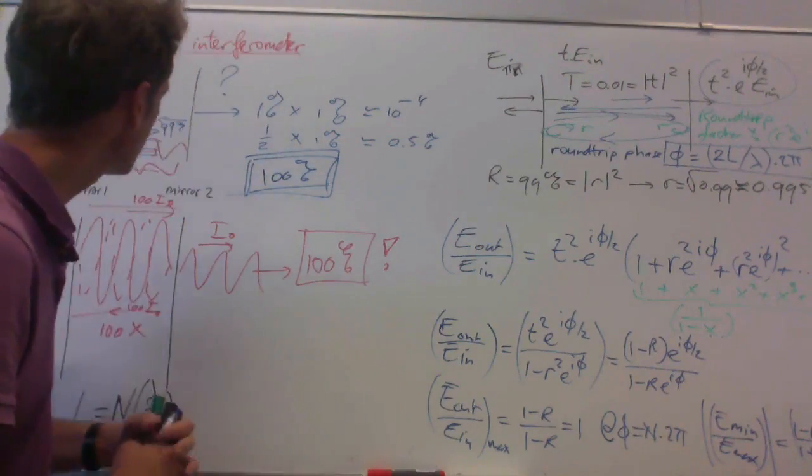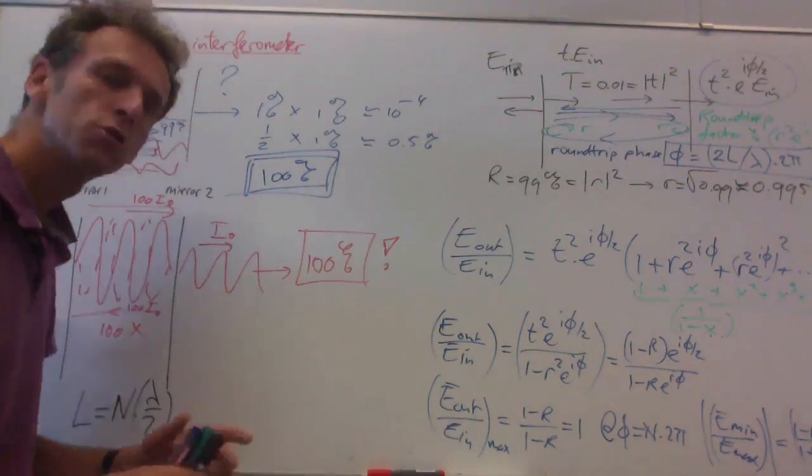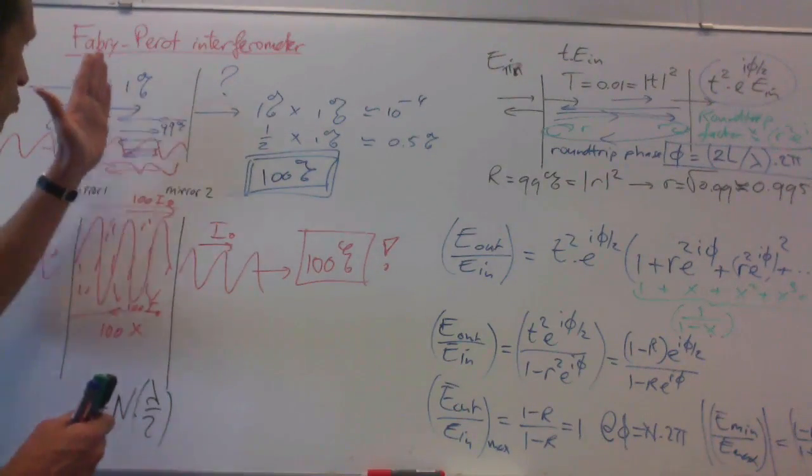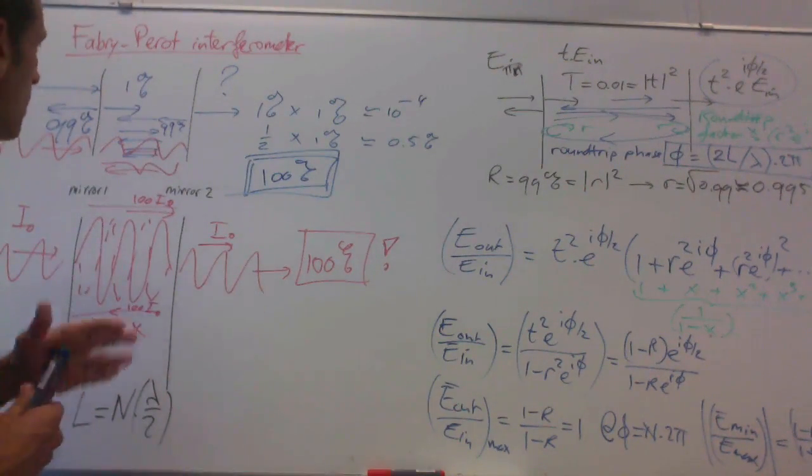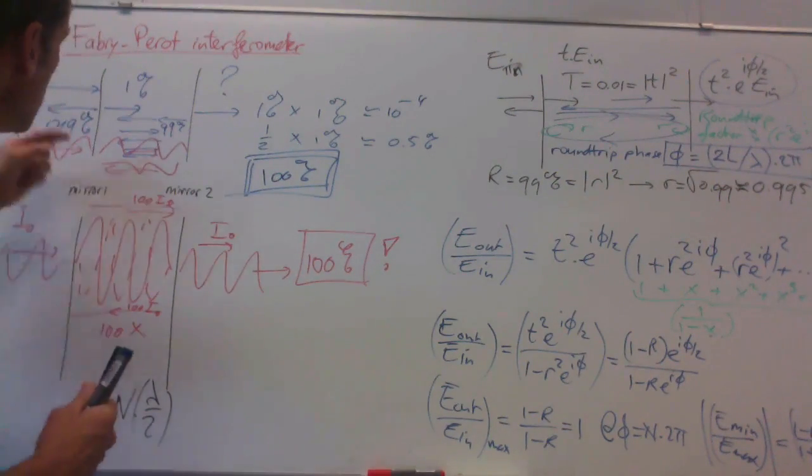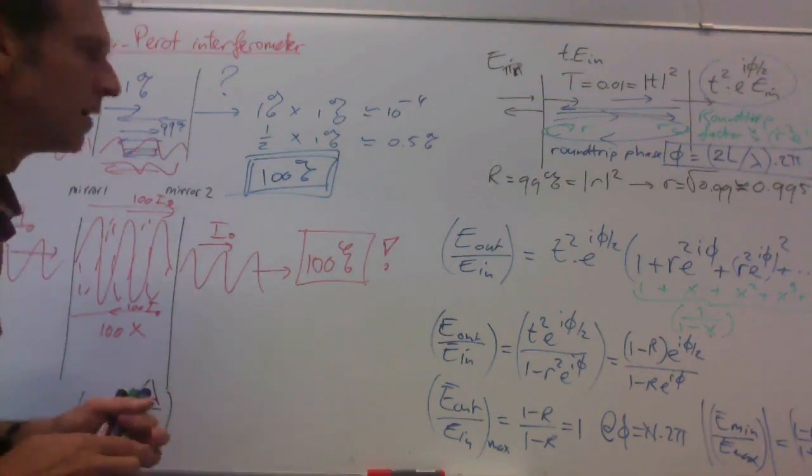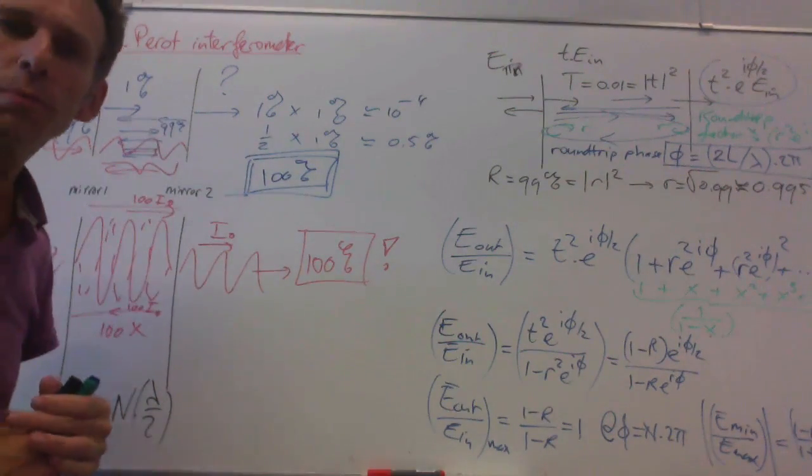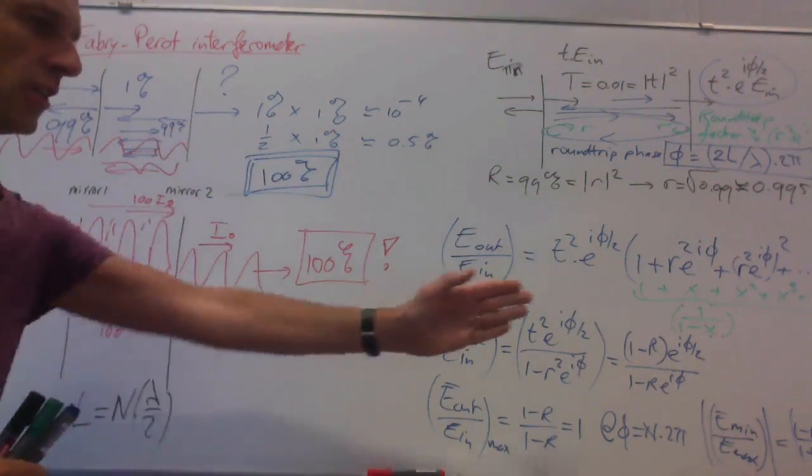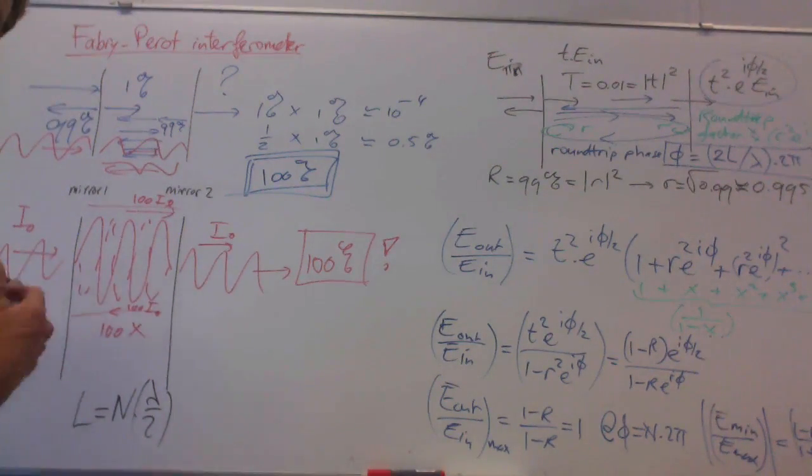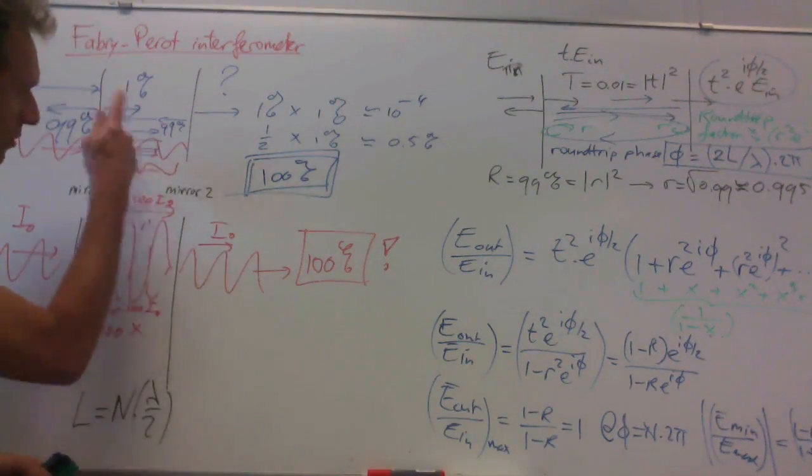So looking back at the system, what we discussed is a Fabry-Perot interferometer comprises two mirrors, two high-reflecting mirrors. Incident light, when it fits in the cavity, gets transmitted by 100%, whereas if it doesn't fit, the transmission is very low. And the reason for that is multiple interference of these round trip paths.